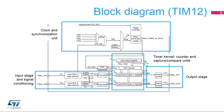The timer kernel consists of a 16-bit up-counter, coupled with an auto-reload register to program the counting period. The two timer channels are controlled by two capture-compare registers. The counter is fed by the clock and trigger controller, also responsible for the timer chaining.